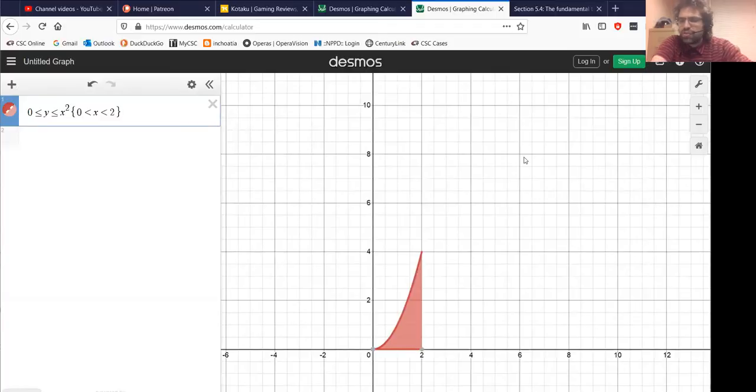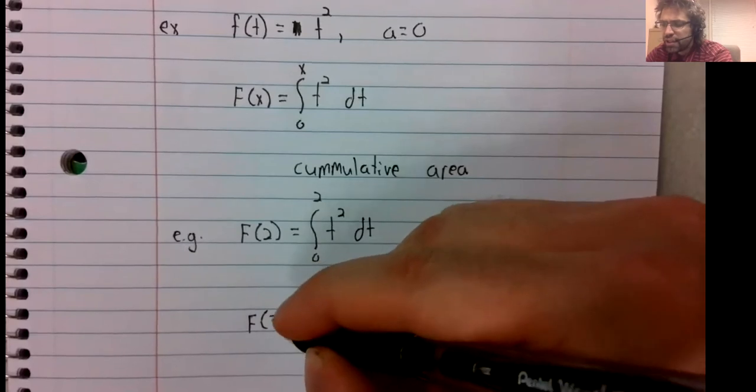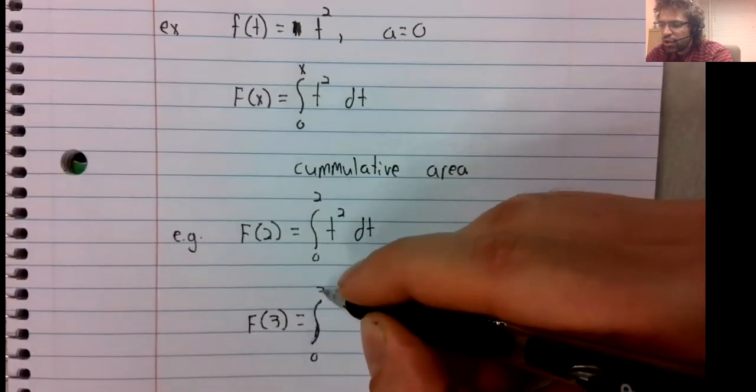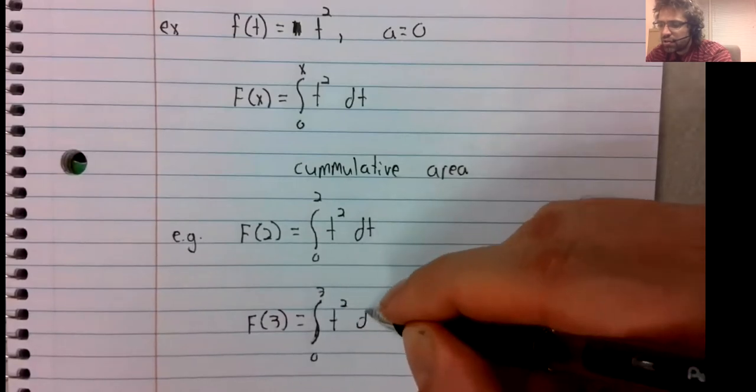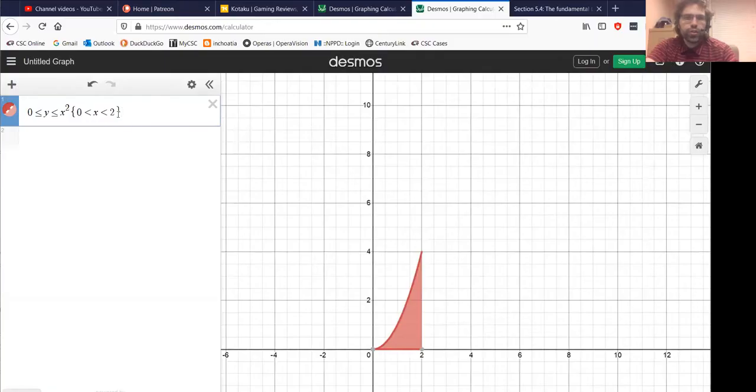The integral from 0 to 2 of t squared dt is the area under the t squared curve. The integral from 0 to 3 of t squared dt is also an area under a curve, but now you're going from 0 to 3 instead of 0 to 2.